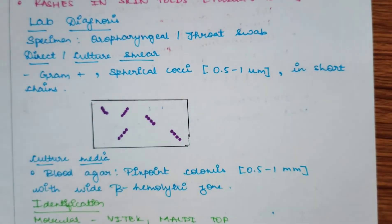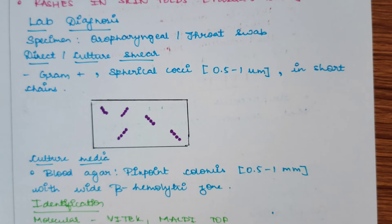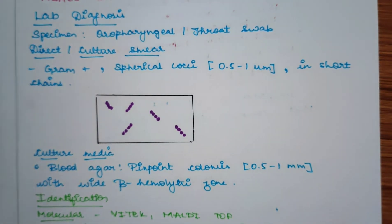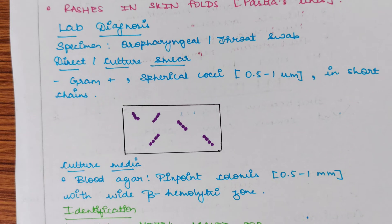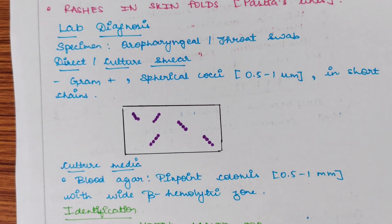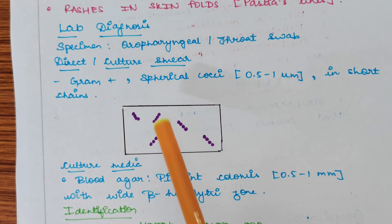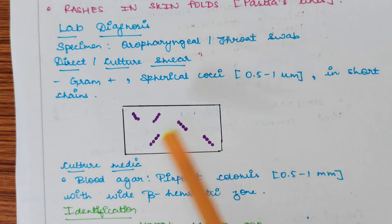Lab diagnosis is the most important part in microbiology. The specimen is collected by oropharyngeal or throat swab. In a direct culture smear, these bacteria will be seen as gram-positive spherical cocci, measuring 0.5 to 1 micrometer in diameter, and they will be seen in short chains.